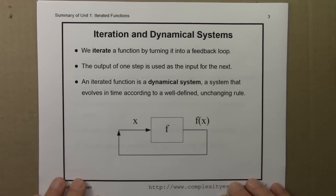An iterated function is an example of a dynamical system, a system that evolves in time according to a well-defined, unchanging rule.